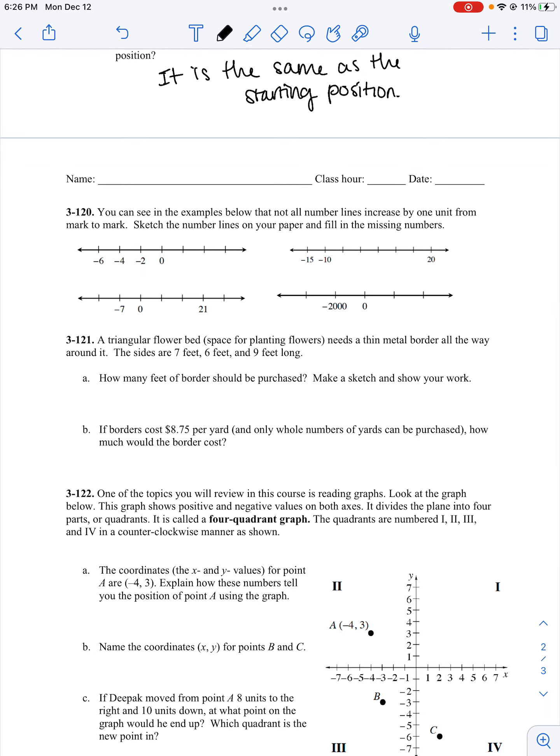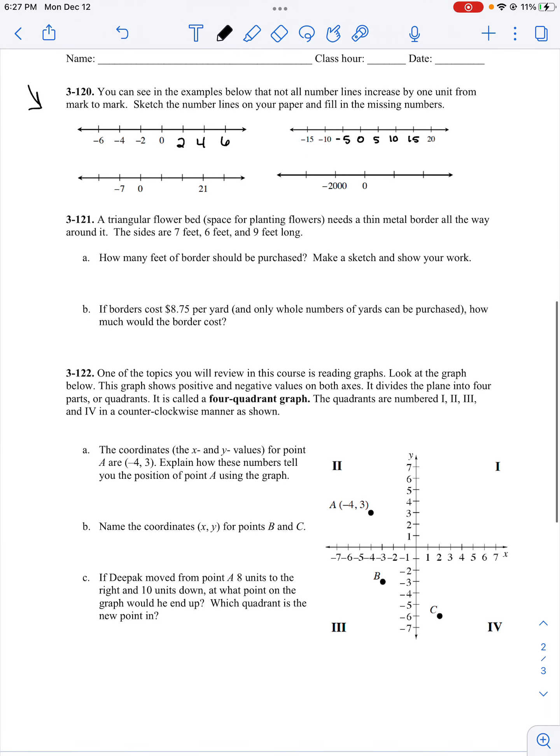Problem 120: You can see in the examples below that not all number lines increase by one unit from mark to mark. We need to sketch the number lines on our paper and fill in the missing numbers. Negative 6, negative 4, negative 2, 0, 2, 4, 6. We're counting by twos. This next one, negative 15, negative 10. It looks like we're counting by fives. If we are, negative 5 would be next. Plus 5 is 0. Plus 5 is 5, 5, 10, 15, 20. We were correct. It is by 5.